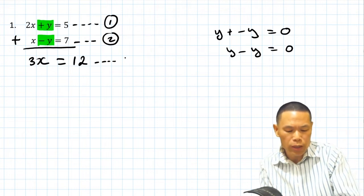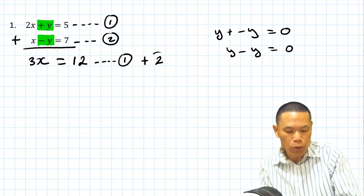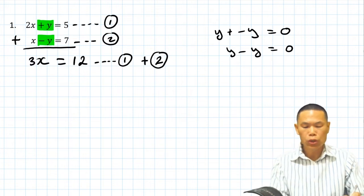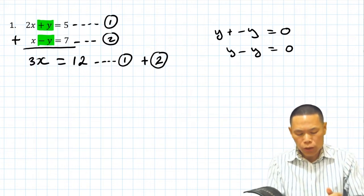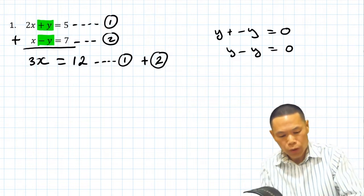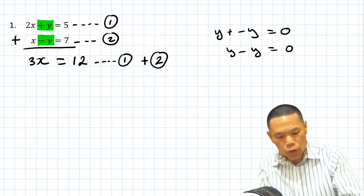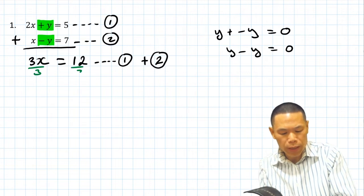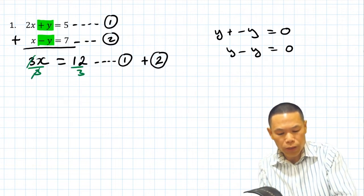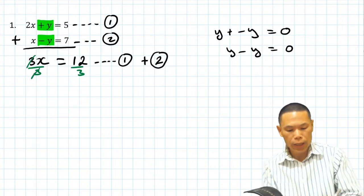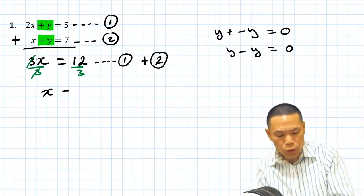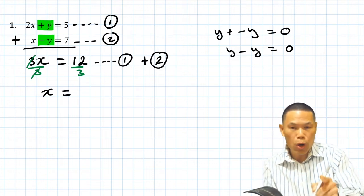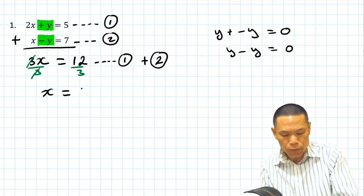So we label this as equation number one plus equation number two. With the two equations added together, 3x is equal to 12. Now we solve it by dividing by 3 on both sides. Therefore, x is equal to 12 divided by 3, which is 4.